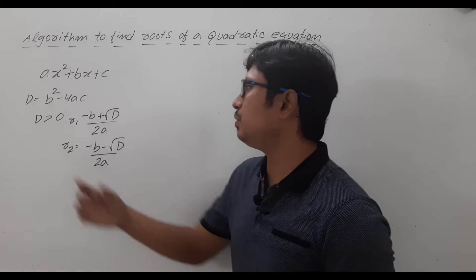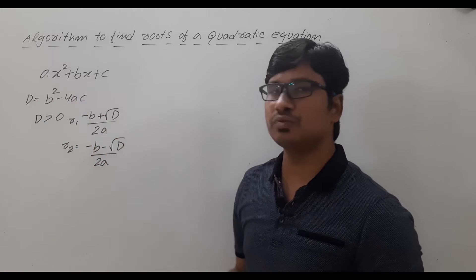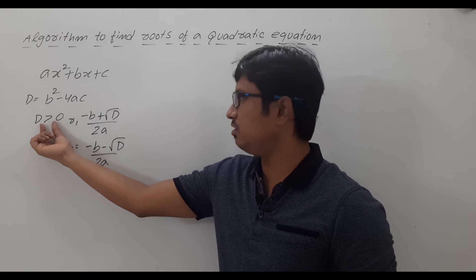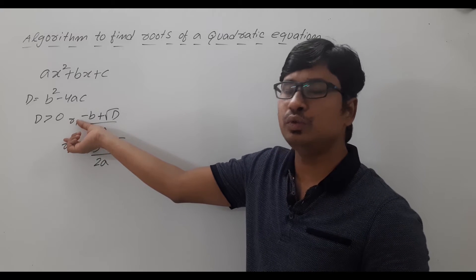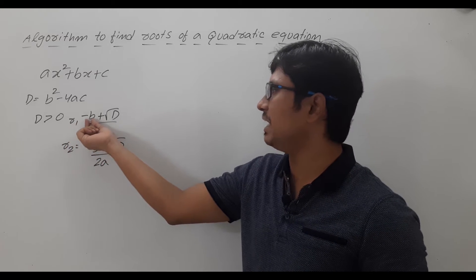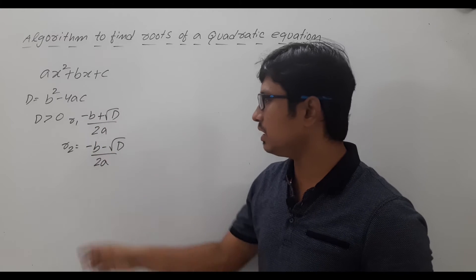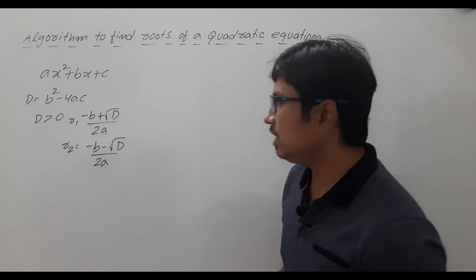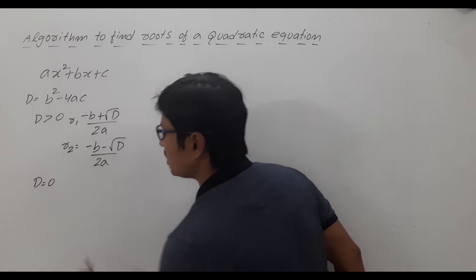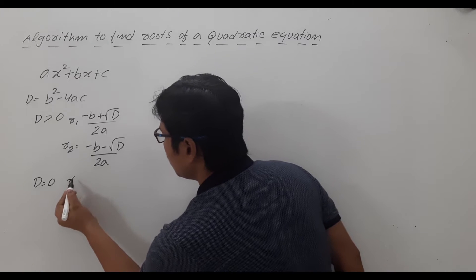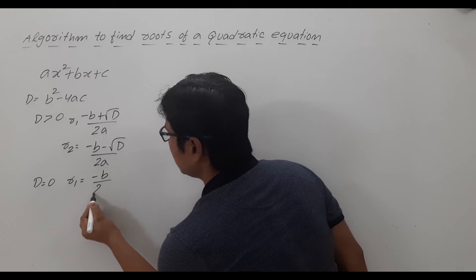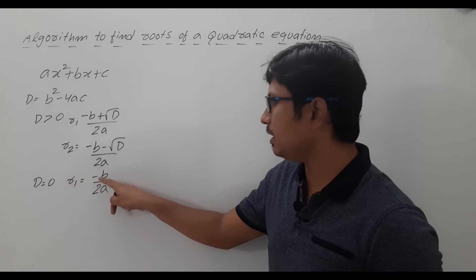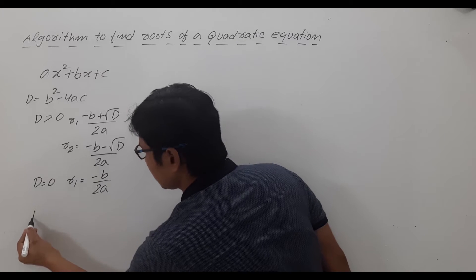So first I compute the d value which is b² − 4ac, the discriminant. If d is greater than 0 then I have two real roots: root 1 is (−b + √d) / 2a and root 2 is (−b − √d) / 2a. If d is equal to 0, then I will have one root which is −b / 2a — the two roots will be equal and they will both be −b / 2a.